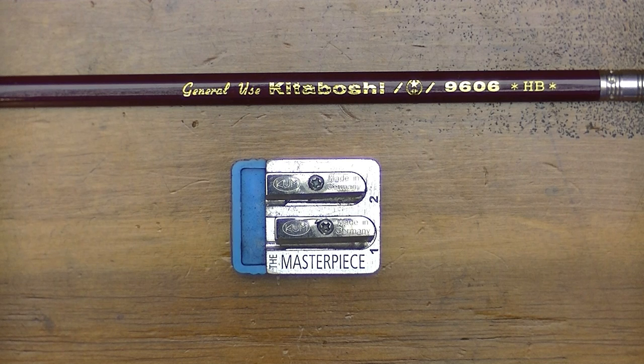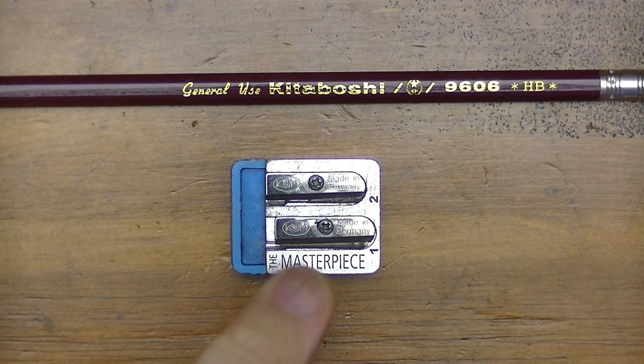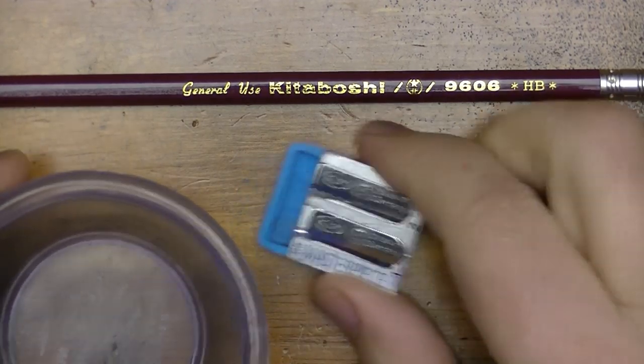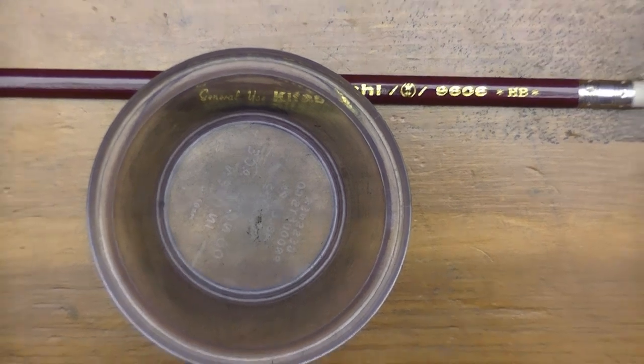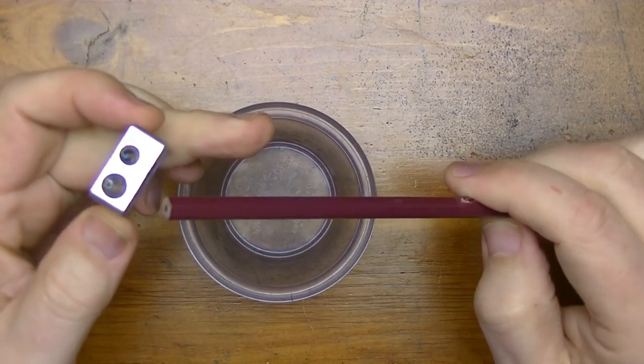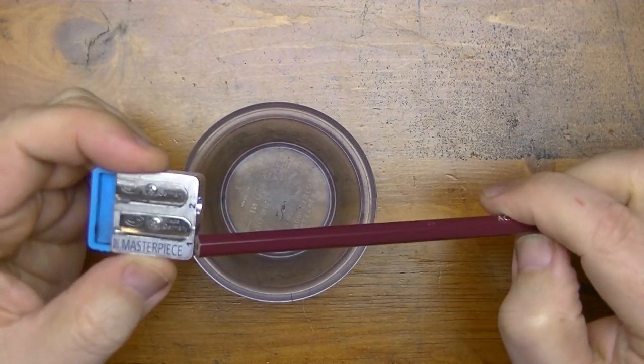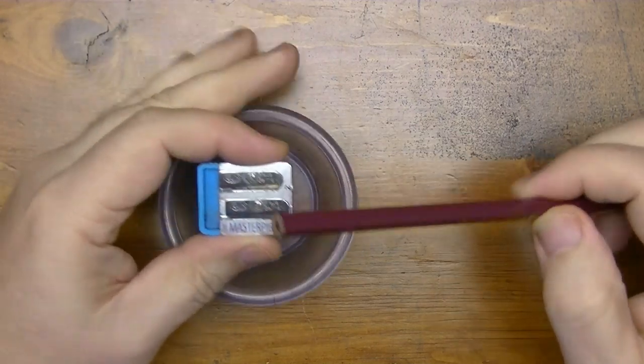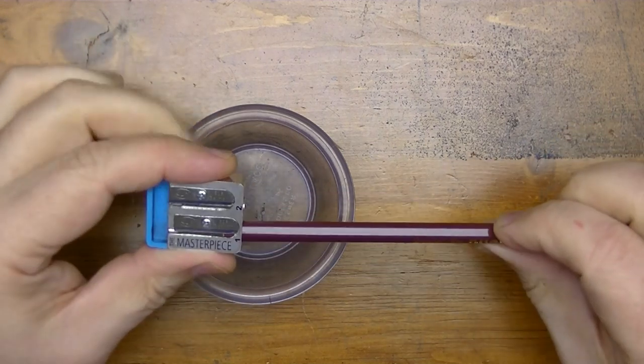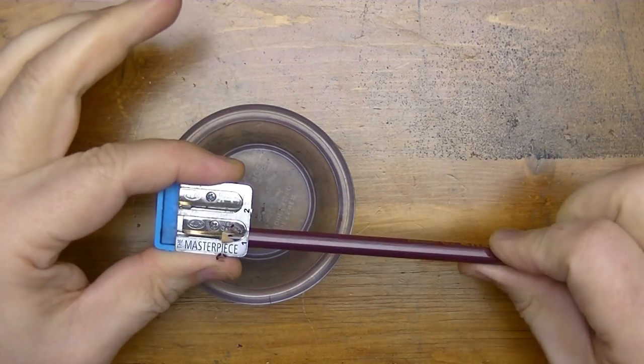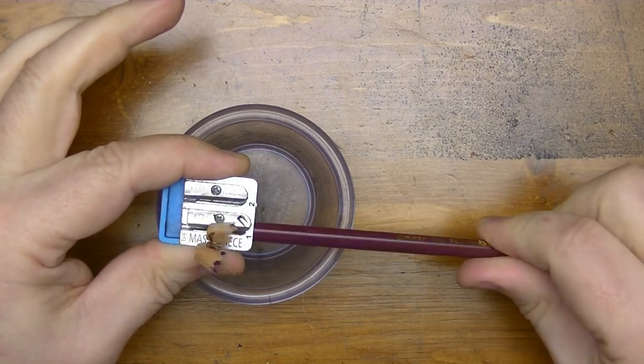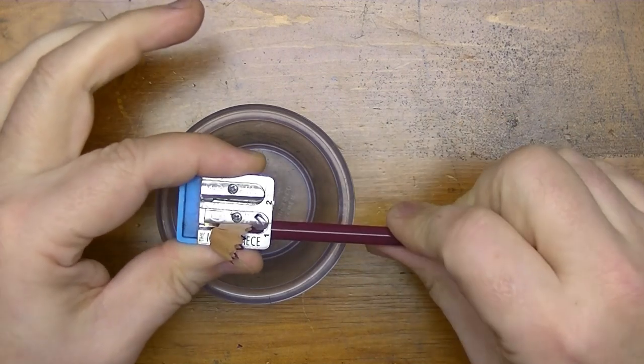I've decided to sharpen this pencil using my Kum Masterpiece pencil sharpener. I'm going to start sharpening on the number one hole. The reason I'm going to use this manual pencil sharpener is so we can take a close look at that cedar wood and get an idea of how easy or not easy it is to sharpen this particular pencil.